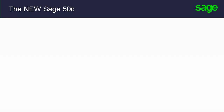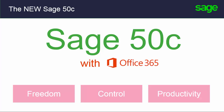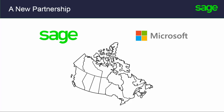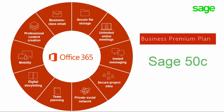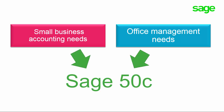Starting March 2017, Sage 50C integrates with Microsoft Office 365. This integration pairs two powerful brands, Sage and Microsoft, as partners in the Canadian market. The Office 365 integration will provide Office 365 Business Premium features to Sage 50C customers. From this point on, small business accounting needs and office management needs can be solved with one solution, Sage 50C.